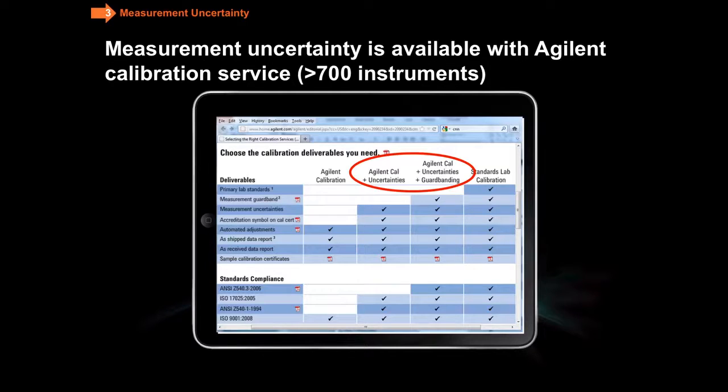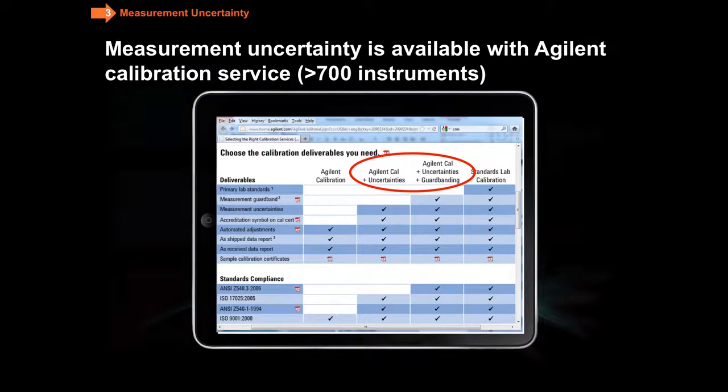Here I want to call your attention to the fact that the ISO GUM was first published in 1995. At Agilent we've been using that in new product introductions ever since about 1996. And that's why we're in a position to offer calibration service, as you see circled in red here, for more than 700 instruments.